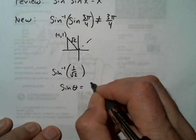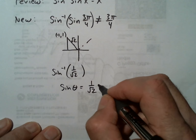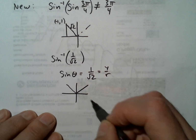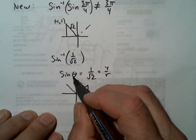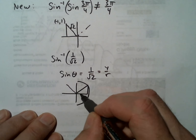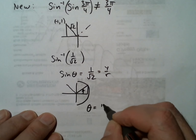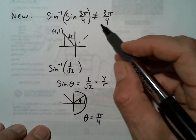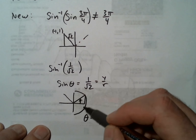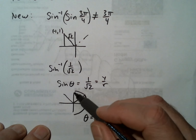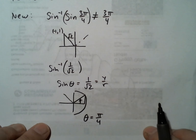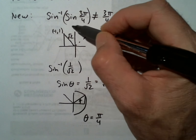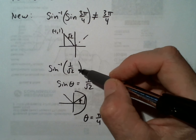Inverse sine of 1/√2 means find an angle that has that sine ratio, where sine is y over r. Since y is positive, we could have two possible angles. But inverse sine can only output values between -π/2 and π/2 — so the answer is π/4, not 3π/4. A good strategy is to evaluate what's inside and then start over with a new problem.